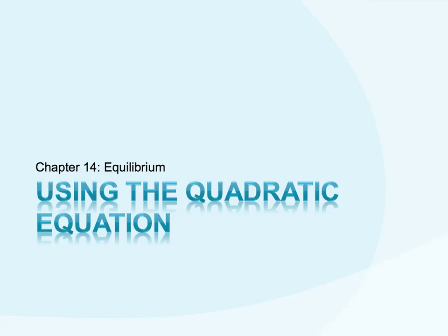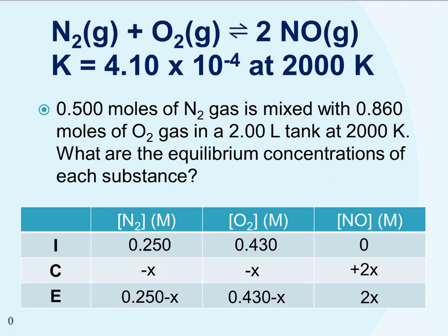We're going to work through the exact same problem we did in class this week. However, instead of making the simplifying assumption, we're actually going to solve for the value of x using the quadratic equation. We were given a balanced chemical equation, the value of k, and some information about what was in the flask. Our values were given in moles, so we use the volume to convert to molarity and put initial concentrations of N2 and O2 into our ICE table.